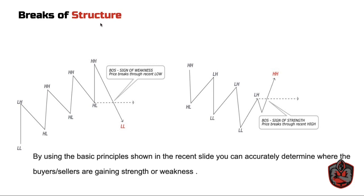Break of structure — by using the basic principles shown in the recent slides on basic market movements, you can accurately determine where the buyers and sellers are gaining strength or weakness within the market. As we can see, price is printing a series of higher highs and higher lows, referred to as an uptrend. But what happens when price fails to maintain its upside presence and actually closes below that recently created higher low? This shows us that the sellers are now coming into power, potentially signaling that the market wants to shift direction to the downside. Same thing for a downtrend — when price breaks above the recently created lower high, that shows the buyers are now coming into power, potentially shifting the direction of the market.